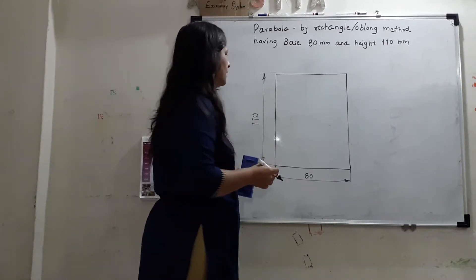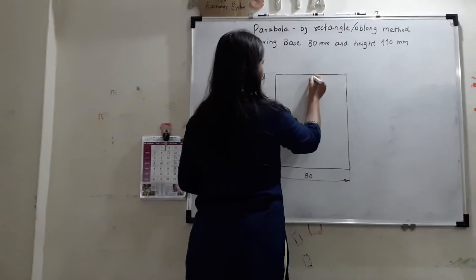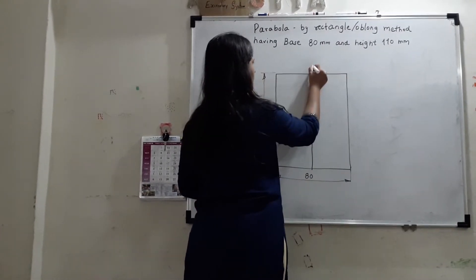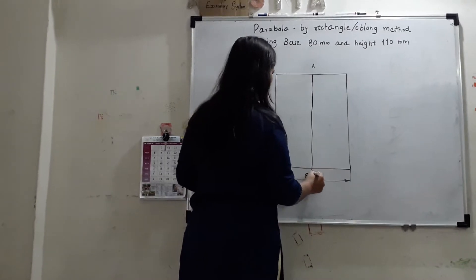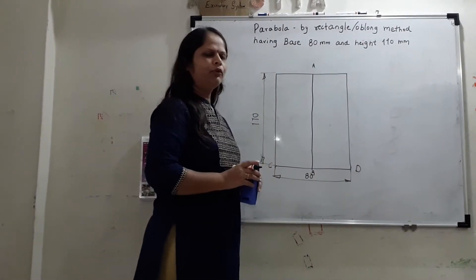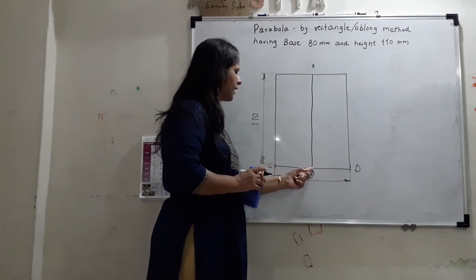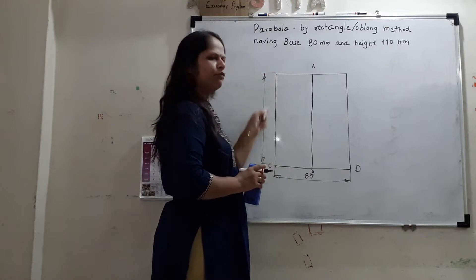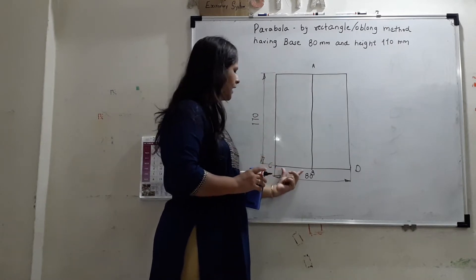Now, the construction will start. We will divide this into equal part. This will be A, B, C and D. Now, what we have to do? We have to divide this half portion in equal division. And same number of division we have to do here. This half is 14.